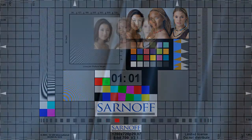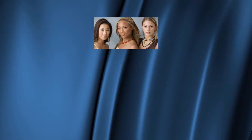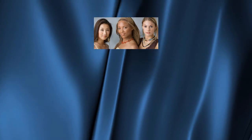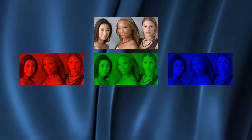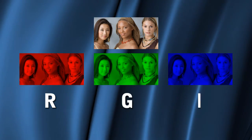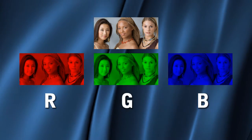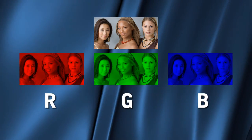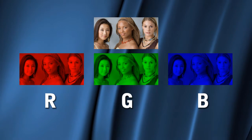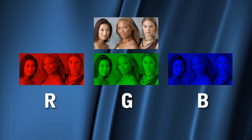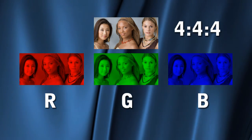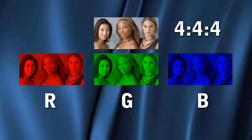Every pixel starts out as three numbers: red, green, and blue. With the same number of pixels in each color, it's called 4:4:4.